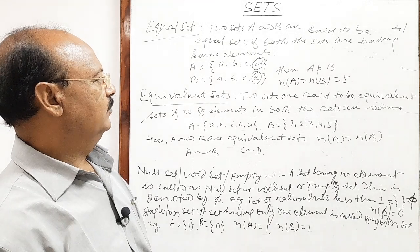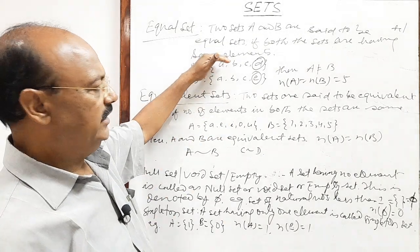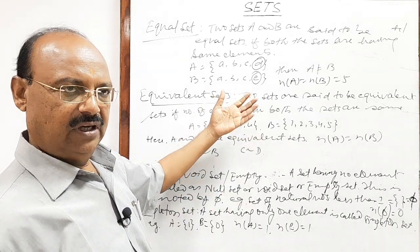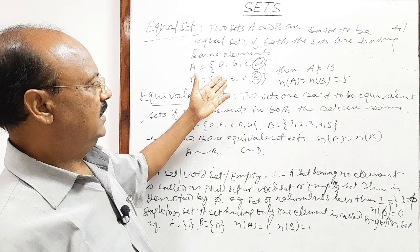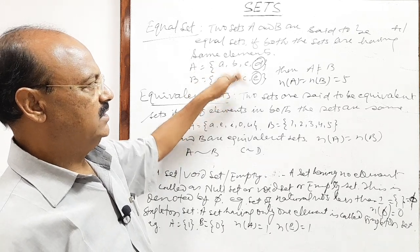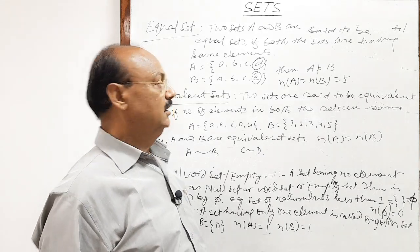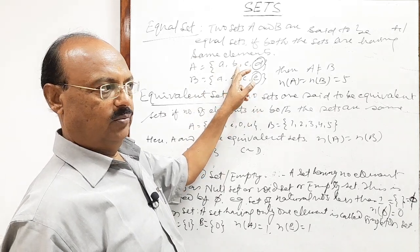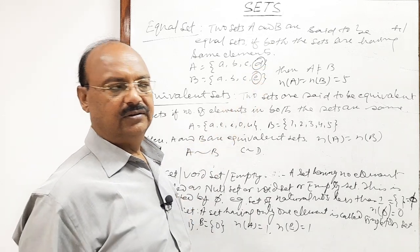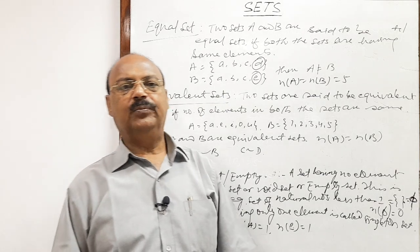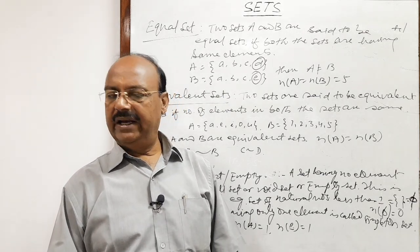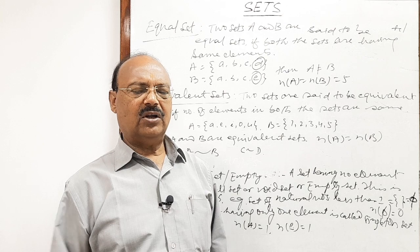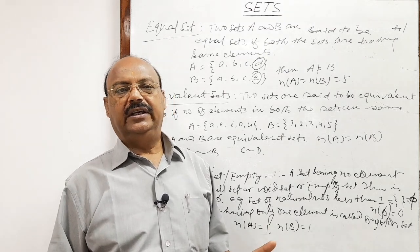It is very important to understand that all equal sets are equivalent, but all equivalent sets are not equal. For example, when both sets have elements A, B, C, D, they are equal as well as equivalent. But the sets A (vowels) and B (1 to 5) are equivalent but not equal, because some elements differ. So equal sets are always equivalent sets, but equivalent sets may not be equal, because the elements in the two sets may differ.